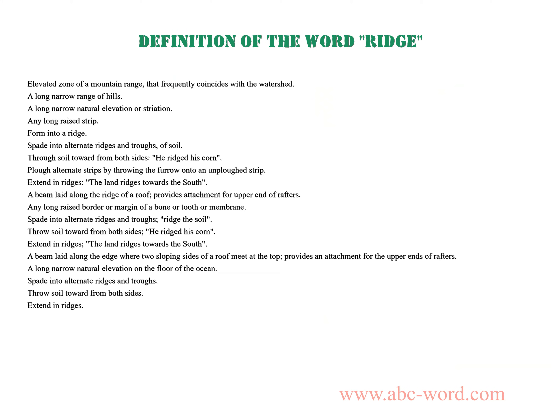After watching this video you will find out what the word 'ridge' means. An elevated zone of a mountain range that frequently coincides with the watershed. A long narrow range of hills. A long narrow natural elevation or striation. Any long raised strip formed into a ridge. Spade into alternating ridges and troughs of soil, throwing soil toward from both sides. He ridged his corn by plowing alternating strips, throwing the furrow onto an unplowed strip. The land ridges towards the south. A beam laid along the ridge of a roof provides attachment for the upper ends of rafters.